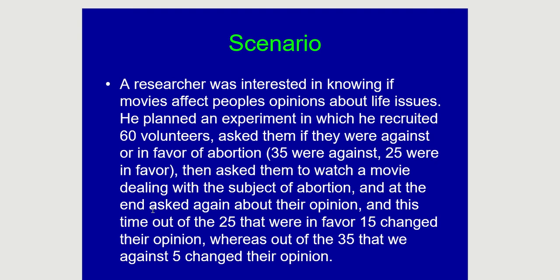At the end of the movie, he asked them again about their opinion. Out of the 25 that were originally in favor, 15 changed their opinion and are now against abortion. Out of the 35 that were originally against, 5 changed their opinion and became in favor. Asking the three classic questions: we have two groups — before the movie and after the movie. The outcome is favor or against, which is categorical. Since it's the same people being asked before and after, these are dependent groups, so we use the McNemar chi-square.